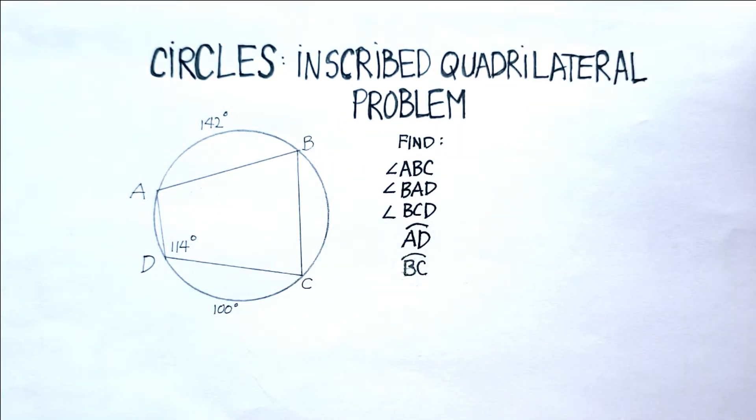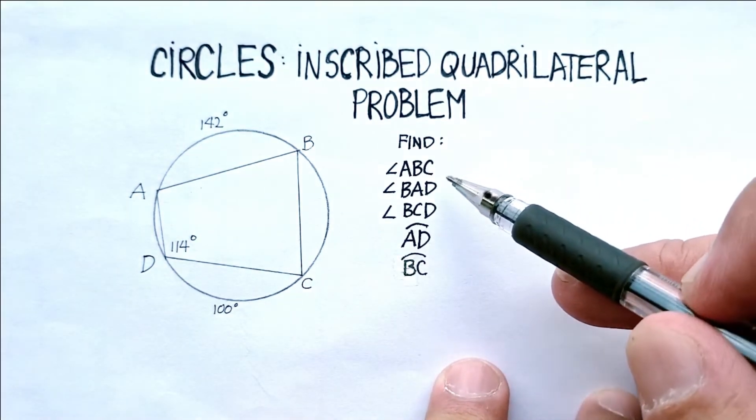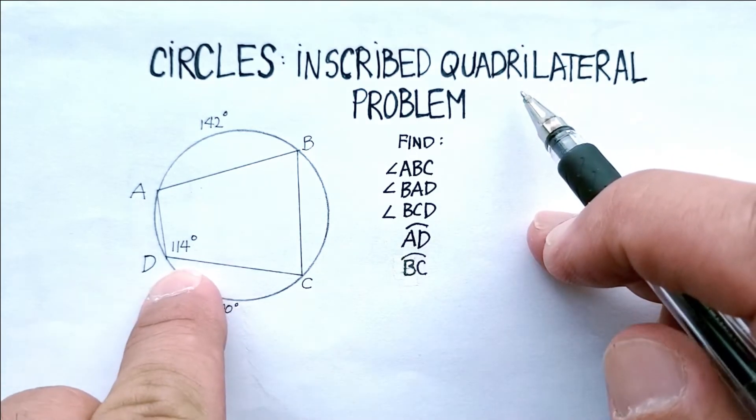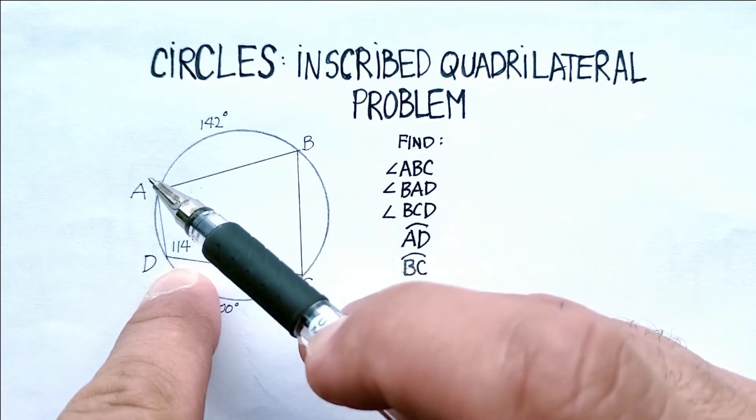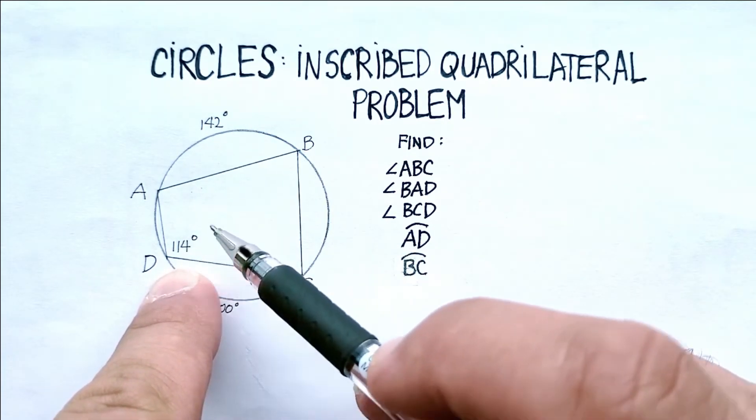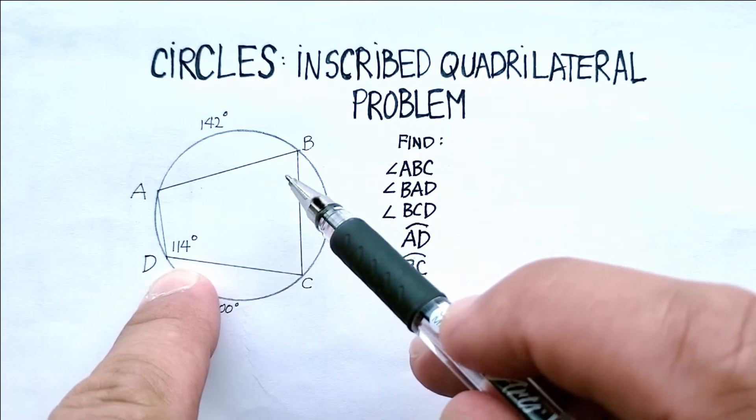Okay, so let's go on here. So first angle ABC, how do we find that? Well we know that when you have an inscribed quadrilateral inside of a circle, the opposite angles are supplementary.